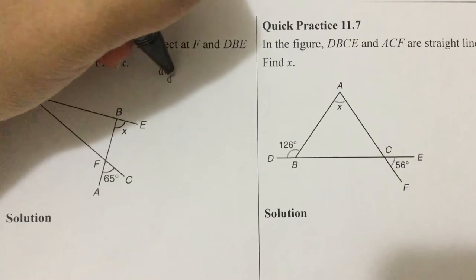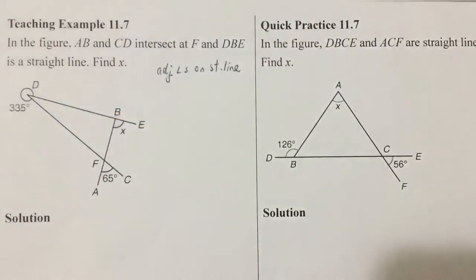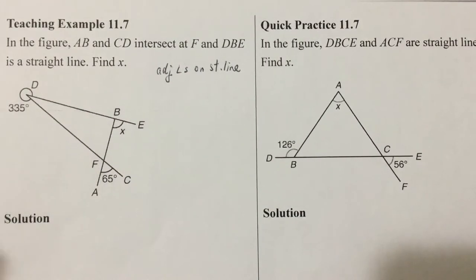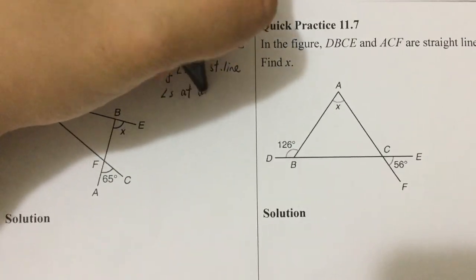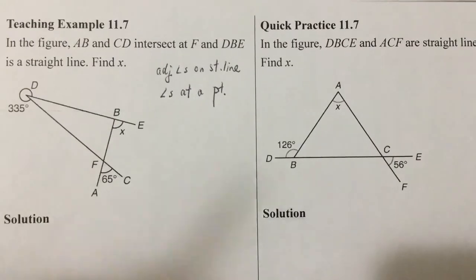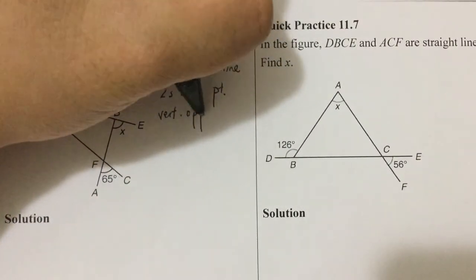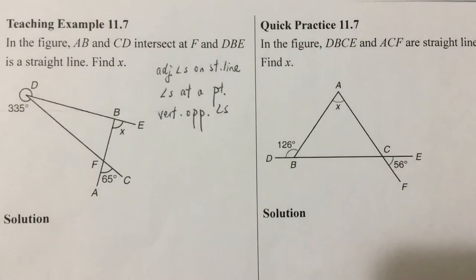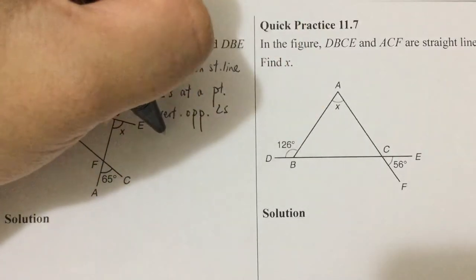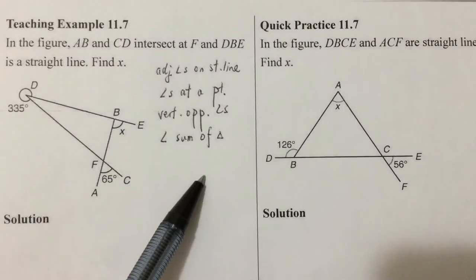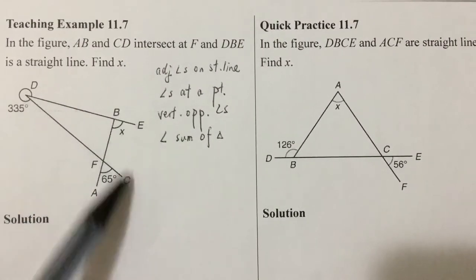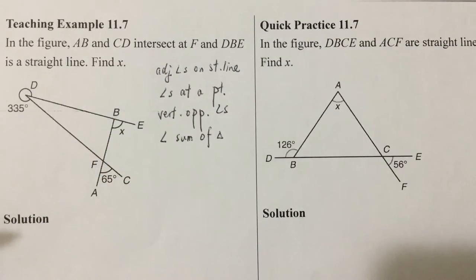The first one is called adjacent angles on a straight line — they add together to give 180 degrees. The second one is called angles at a point — you add all these angles and you will have 360 degrees. The third one is called vertically opposite angles — for every cross, the opposite angles are equal. The last one is called the angle sum of a triangle, which we learned in chapter 6 — all angles add together to be 180 degrees.